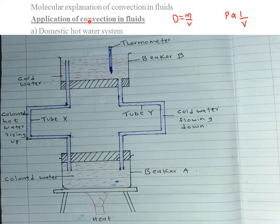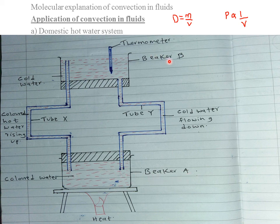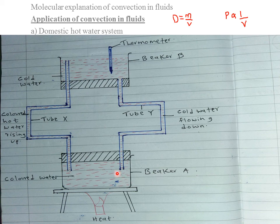We look at various applications of convectional currents in fluids. Our first application is in the domestic hot water system. Here is a typical diagram. We have two beakers — beaker A and beaker B — and a thermometer to detect any increase or decrease in temperature. Initially, both beakers are filled with cold water. We color the water in beaker A so as to distinguish it from the water in beaker B.